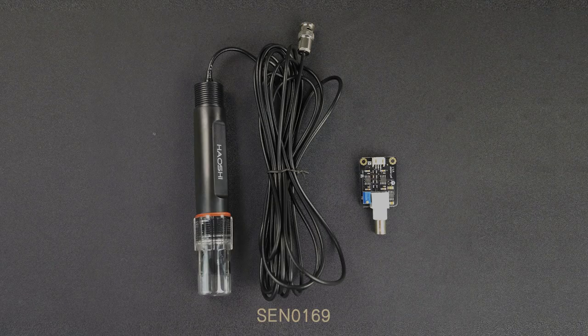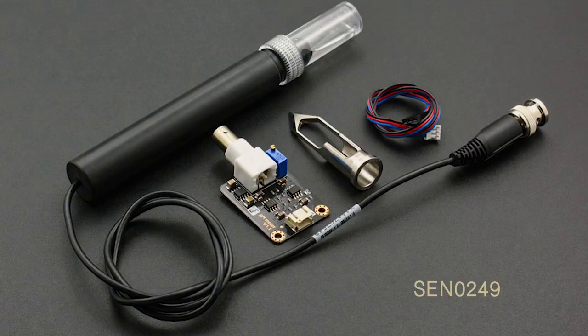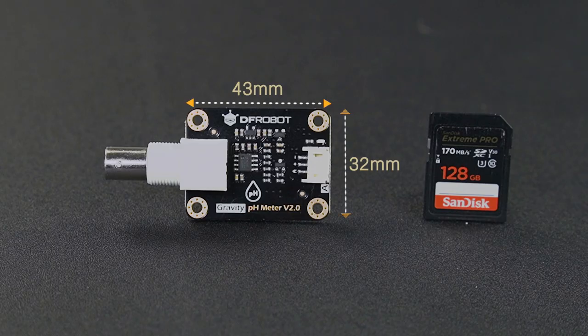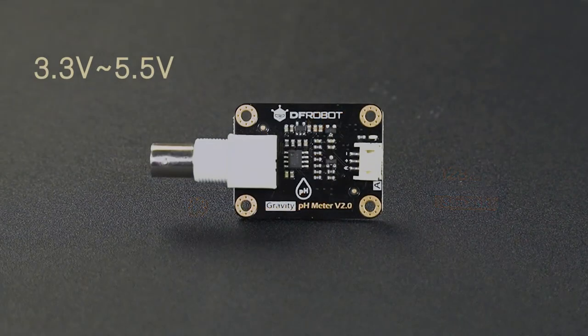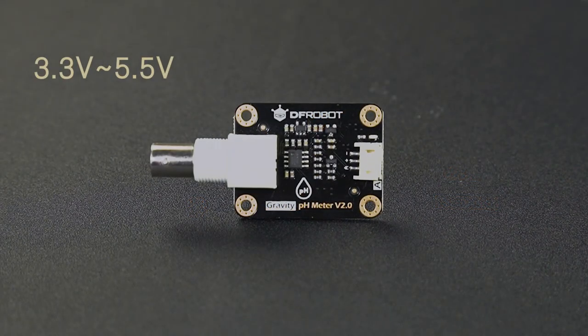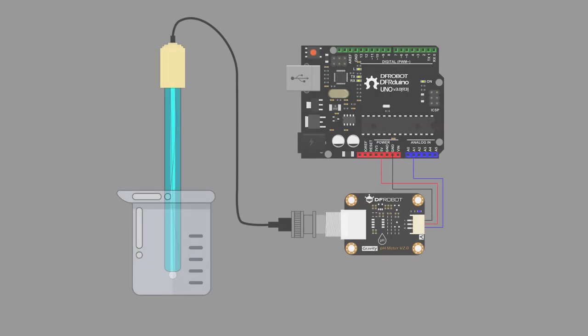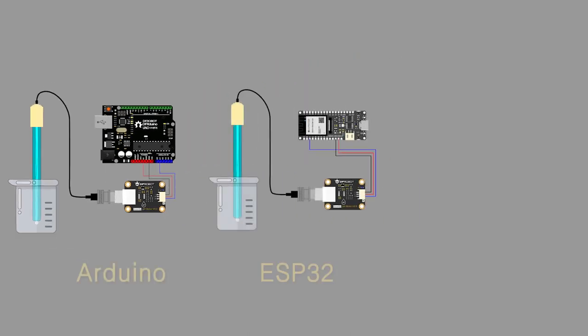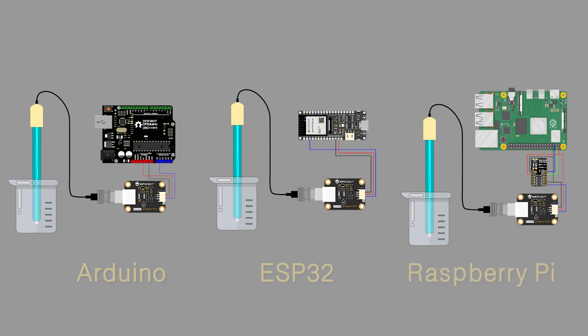the pH sensor for industrial use, and the niche pH sensor with spear tip for measuring the pH of wet soil and foods. Also, there are version 2.0 pH sensors that can be powered by 3.3 to 5 volts, so they are compatible with multiple main controllers like Arduino, ESP32, Raspberry Pi, and so on.